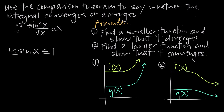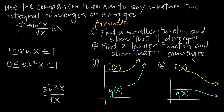We know sine of x is between negative 1 and positive 1, but here we're dealing with sine squared, so we're squaring this value. If we took a value that produced a negative result and squared it, we'd get a positive result. So if we change sine of x to sine squared, we're squaring all these values and will always get a positive value, which means sine squared of x is always greater than or equal to 0 and less than or equal to positive 1. So we could compare sine squared of x over the square root of x to 1 over the square root of x.